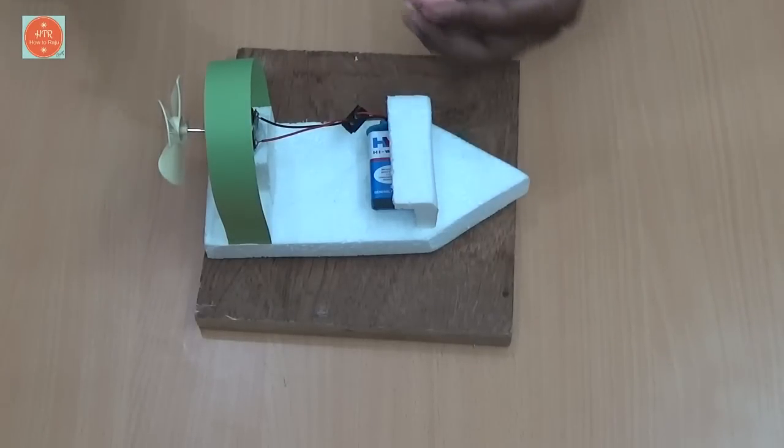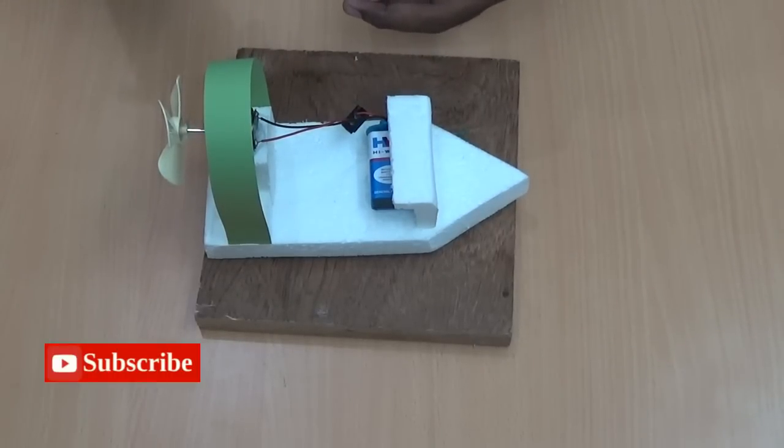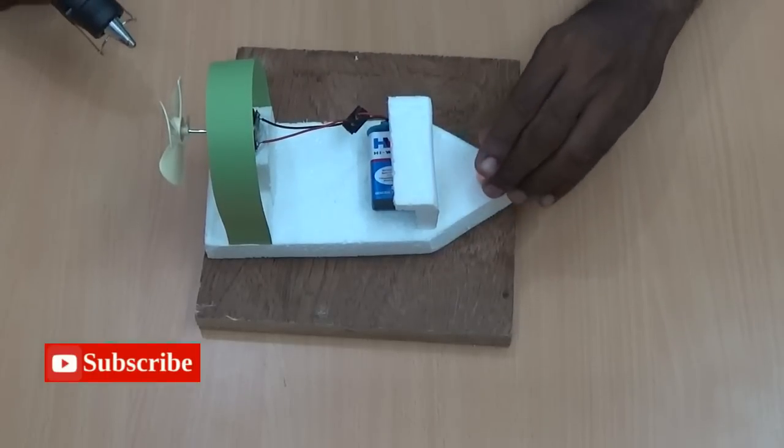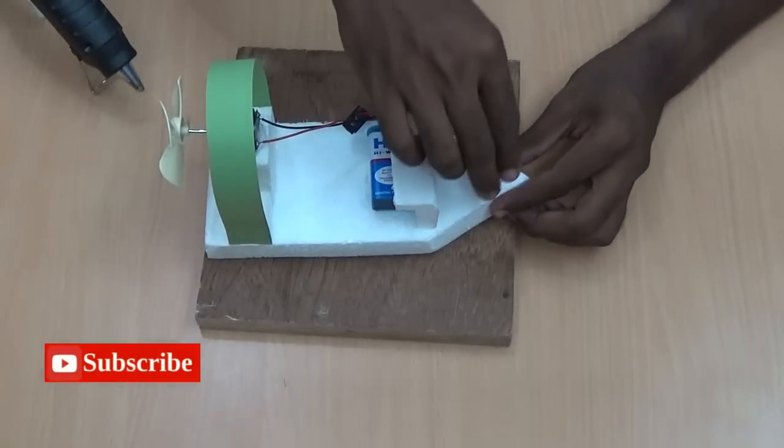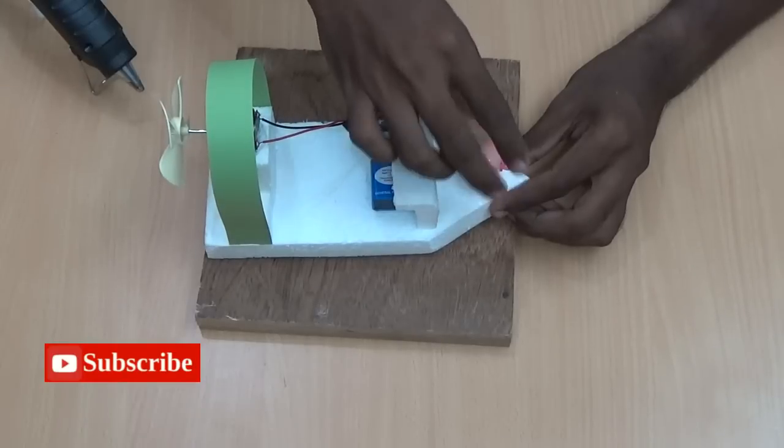I am going to decorate the boat. I am placing this small tie. I am placing it in the front of the boat.